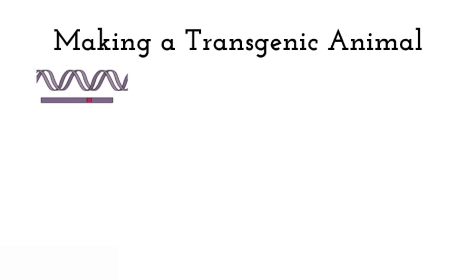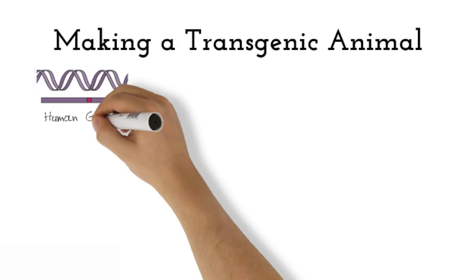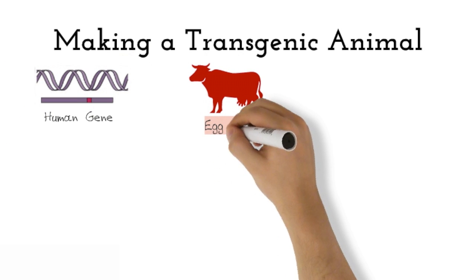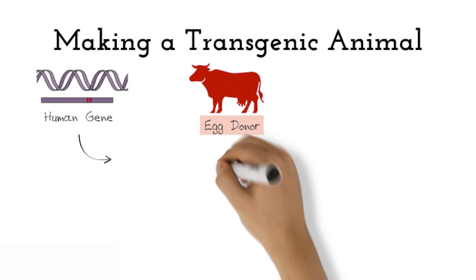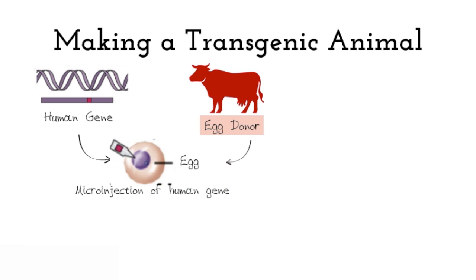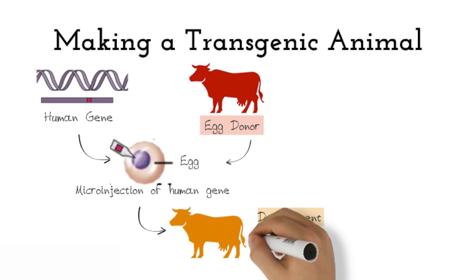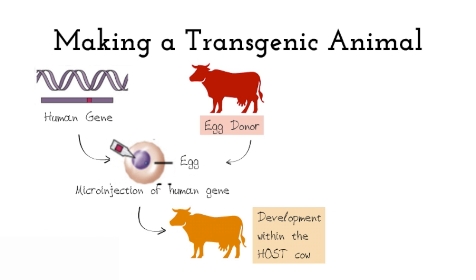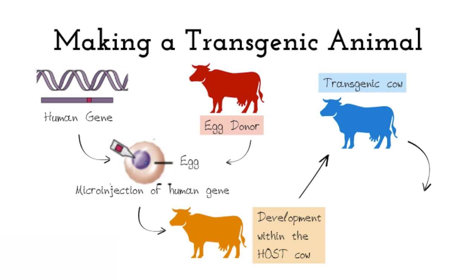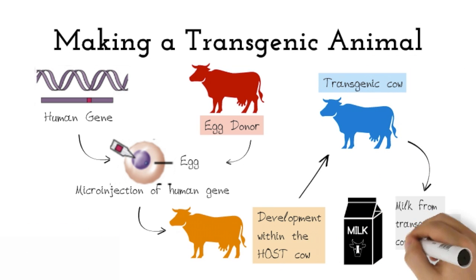The most common way of creating transgenic animals is through DNA microinjection. In this example, we will be inserting the human gene into a cow. The human gene is microinjected into the egg from the egg donor. This egg will be reinserted and developed in the host cow to become the transgenic cow, which will express the human gene — in this case, in the milk.